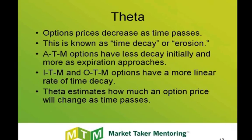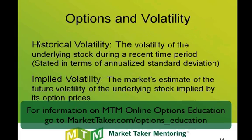Whether an option is in the money, at the money, or out of the money has an influence on its time decay. At the money options have less time decay initially, but they gain time decay — that is, they lose their value faster as expiration approaches. In the money and out of the money options have a more linear rate of time decay; they lose their value at a pretty steady rate, maybe a penny a day every day. We can estimate how much we lose in time decay with the Greek theta. Theta is the rate of change of an option price as time passes, and it's measured in dollars and cents.